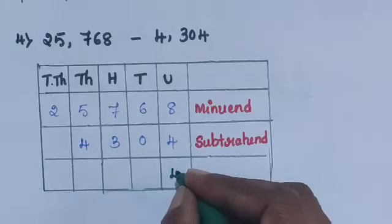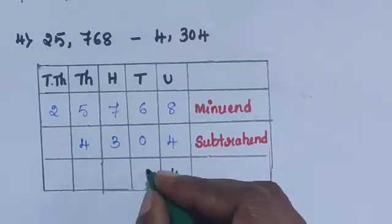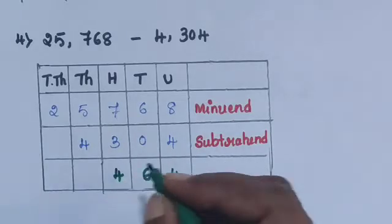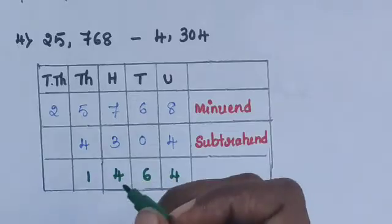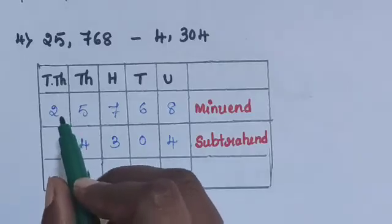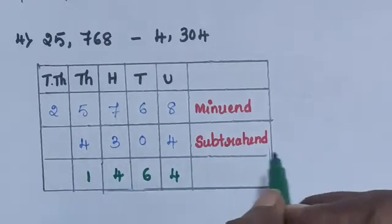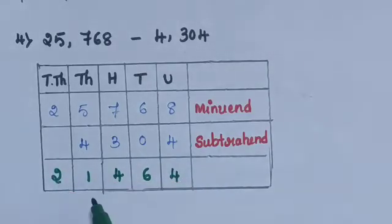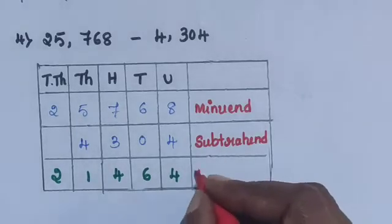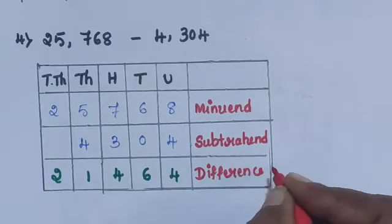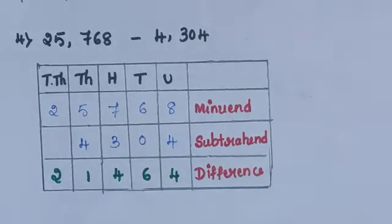Find the difference: 8 minus 4 is 4 in the units place. 6 minus 0 is 6. 7 minus 3 is 4. 5 minus 4 is 1. For the ten-thousands place there is no value to subtract, so the answer is 2. Then 21,464 is the difference of these two numbers and the answer is 21,464.